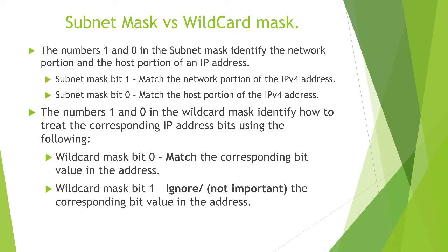A wildcard mask is going to use ones and zeros as well, however we use them a little bit differently. With a wildcard mask, whenever we have a zero, we know that the zero means we must match the corresponding bit in that address. So it's almost the reverse of a subnet mask. Whereas with the subnet mask when I see a one I know that must be part of the network, with a wildcard mask if I see a zero then I know I must match that part of the address.